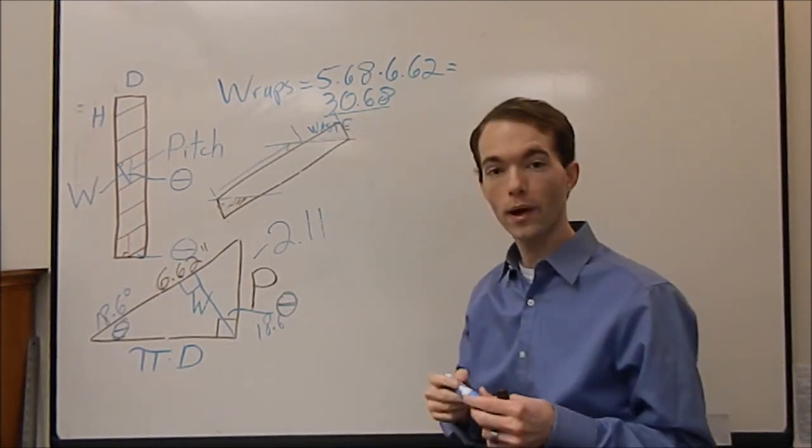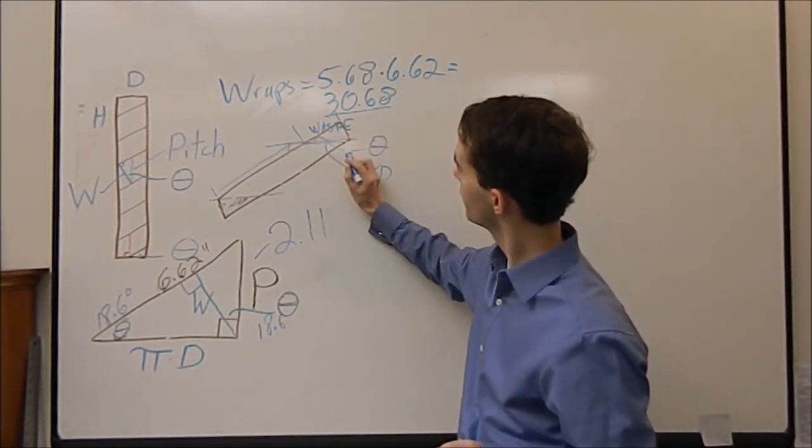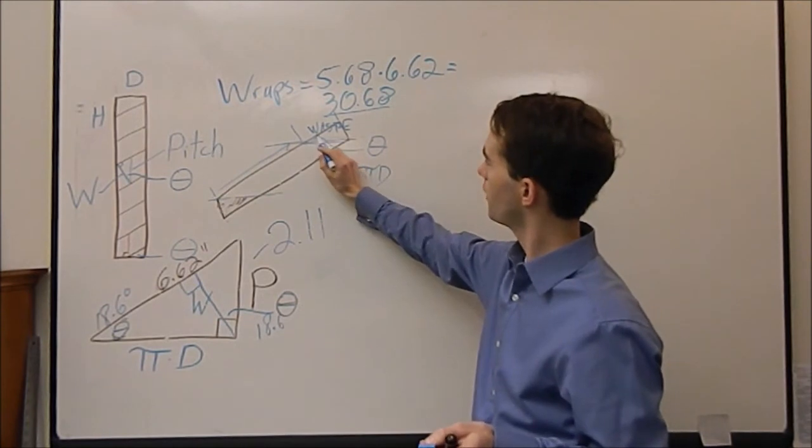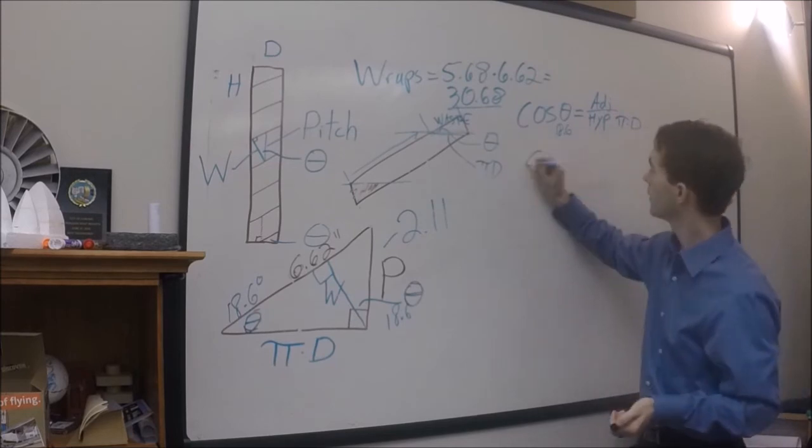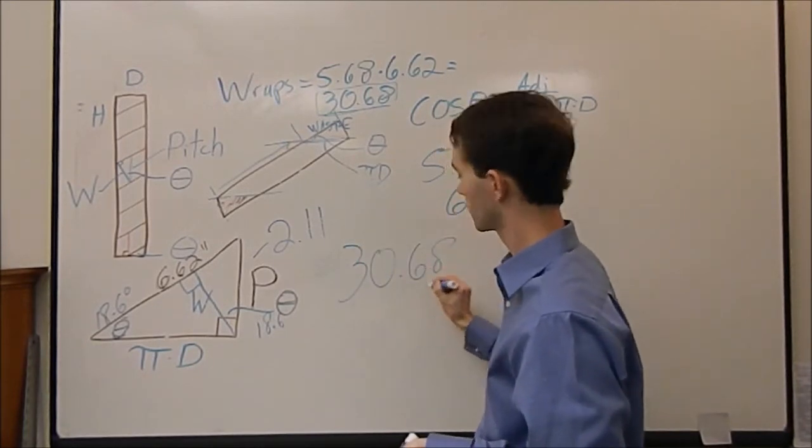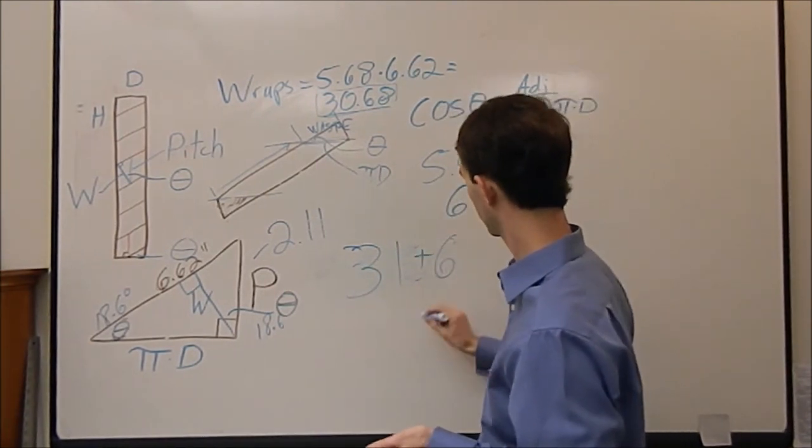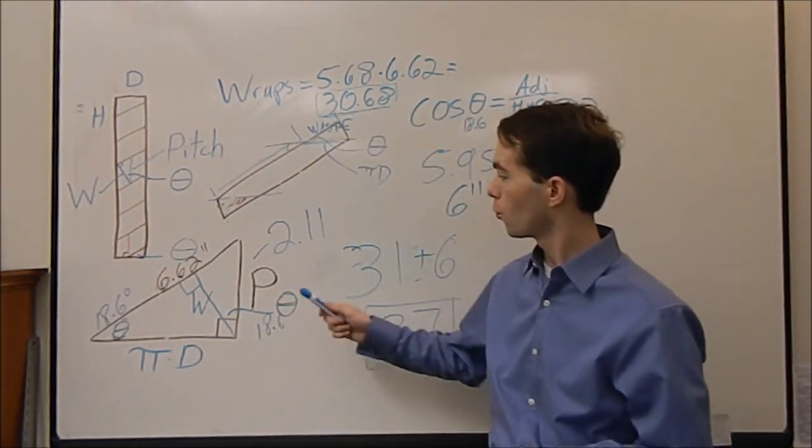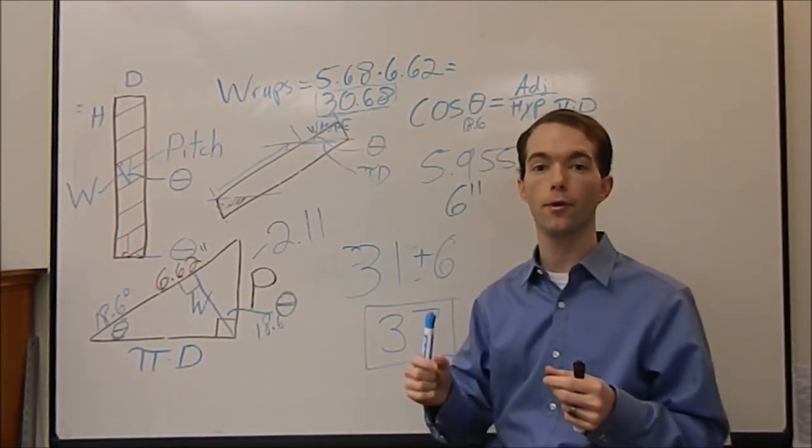How do you calculate how much waste that is? It's actually not that hard. We've got the hypotenuse here. We've got our theta. So what we want is this adjacent side. Well, what relationship is hypotenuse over adjacent? Well that's the cosine relationship. What this all comes out to be is 5.955. Let's call that 31. 31 plus 6. You need 37 inches of duct tape wrapped at 18.6 degrees with a pitch of 2.11 inches between spirals in order to cover this 2 inch diameter 12 inch pipe.